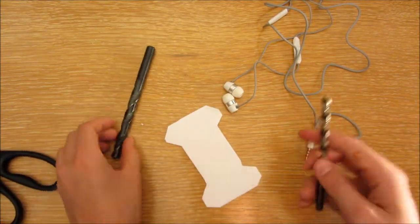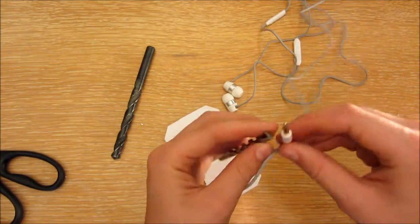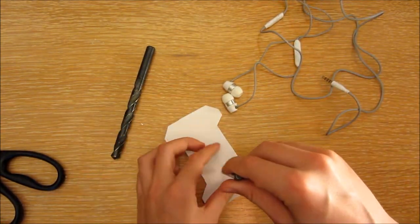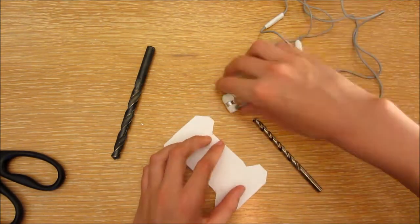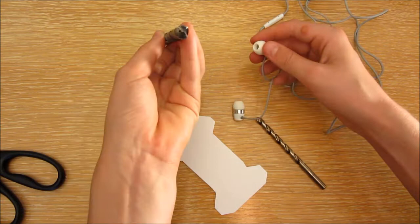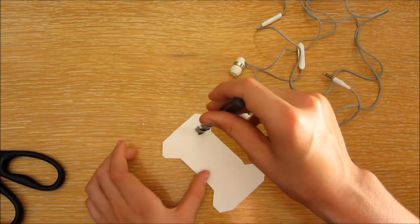Take a drill bit the size of your jack and drill a hole right about here. Then take another drill bit the size of your headphones and drill a hole here and a hole here.